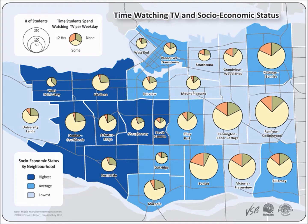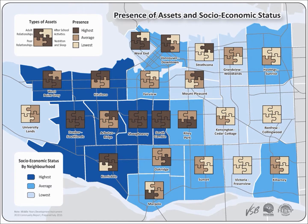Things like peer relationships, after-school activities, nutrition, and sleep — you may not have a direct influence on those, but you can create spaces for children to interact with peers; you can create after-school activity places. And the way I like to think about these assets is they're like the soil that we create our city, and the children are the flowers that grow from the soil. I know it's cheesy, but forgive me.